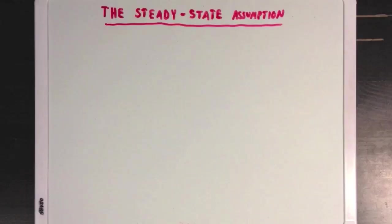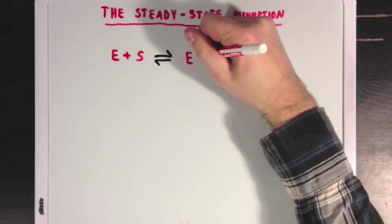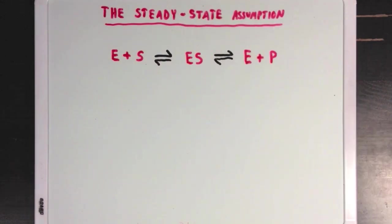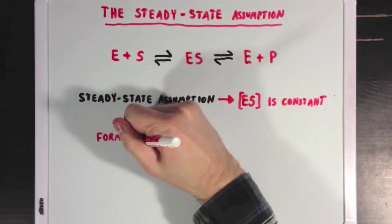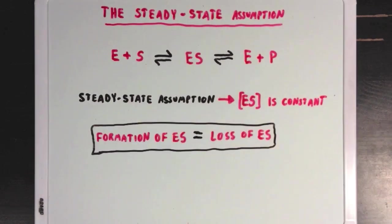So first, we'll talk about the steady state assumption, and what that means. There are two steps to an enzyme's catalysis. When we use the term steady state, what we mean is that we're at a point where the concentration of ES, or enzyme substrate complex, is constant, which means that the formation of ES is equal to the loss, or dissociation of ES.